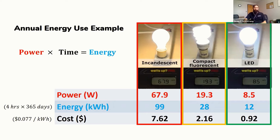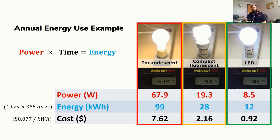I've included an example here of three different light bulbs — the old-fashioned incandescent light bulbs use a lot more energy. The more energy-efficient LED light bulb has less power and as a result uses less energy. You can see the difference in cost: just because the LED has less power at only 8.5 watts, it uses only 12 kilowatt hours, and you end up paying much less.